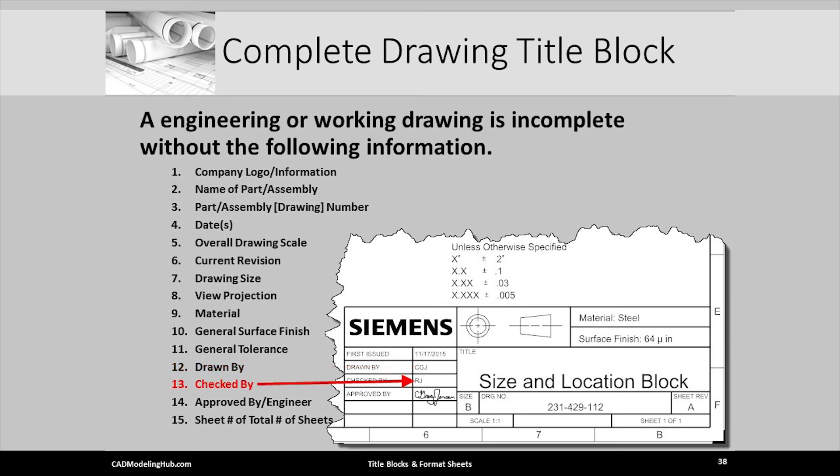This is the checked by cell where the drafting supervisor or checker, whose role it is to make sure that the drawing meets the company's standards, would letter their initials once the drawing passes their approval.